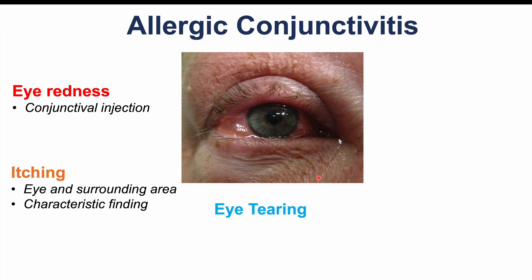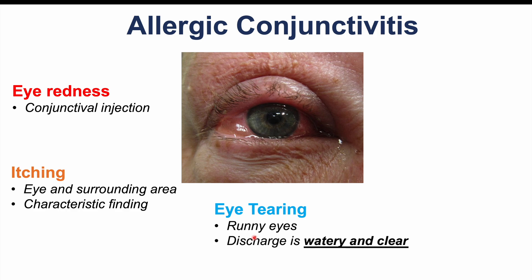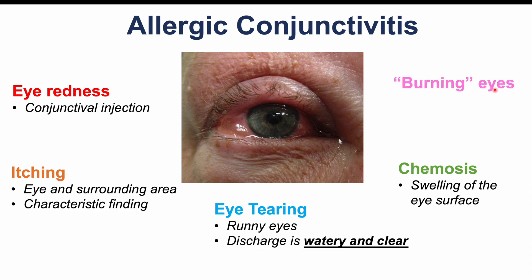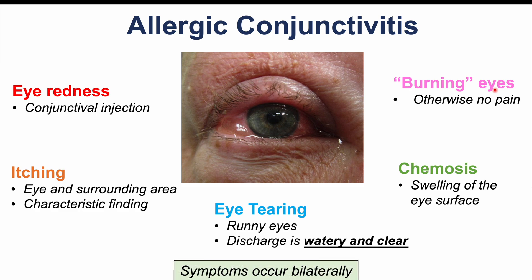Along with itching, tearing of the eyes is very common with allergic conjunctivitis. The discharge is going to be watery and clear. We can also see something called chemosis, which is the swelling of the eye surface. Some patients may have burning eyes — a sensation of burning — but there's no pain with the eye. Symptoms are going to occur bilaterally, meaning in both eyes.